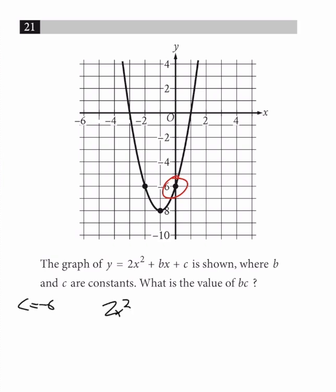Let's plug that into our initial equation, plus bx minus 6. Now we're going to take another point from our graph, and we're going to plug that in. We'll take this one, that's negative 2 comma negative 6, and then we're going to solve for b.